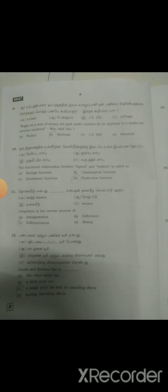Twelfth one: Goods and services tax is Option C, a single point tax with no cascading effects. Thirteenth one: Economics is the study of mankind in the ordinary business of life. It is the statement of Option A, Alfred Marshall.